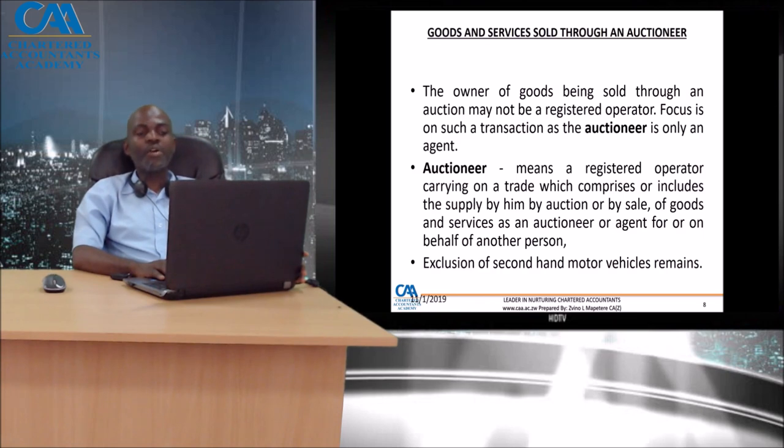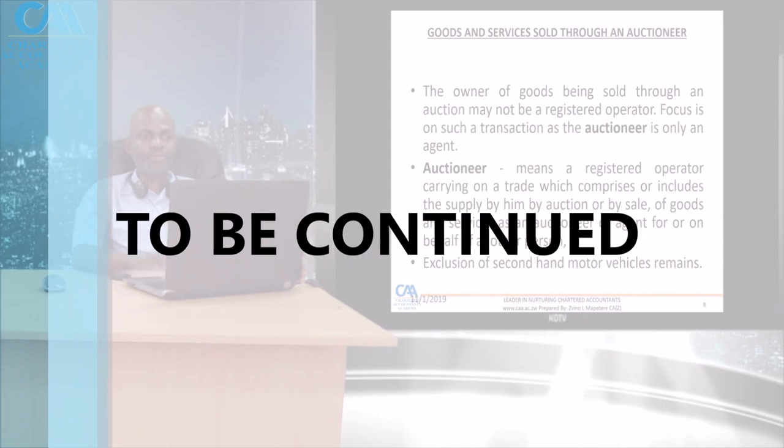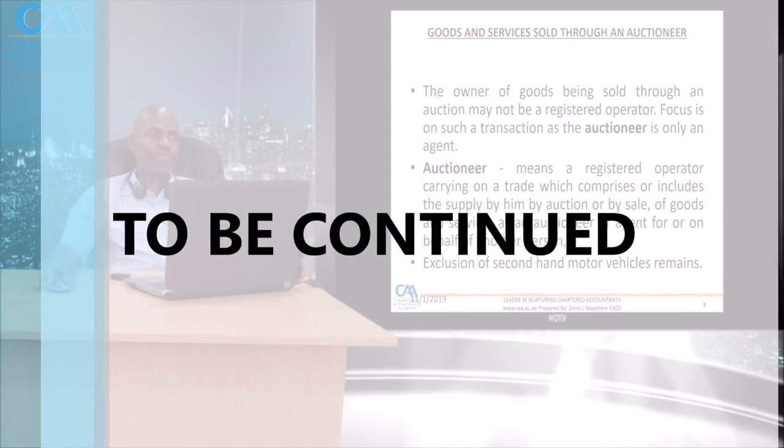Section 6(1)(a) and Section 6(1)(d) exclude the supply of second-hand motor vehicles from this auctioneer provision.